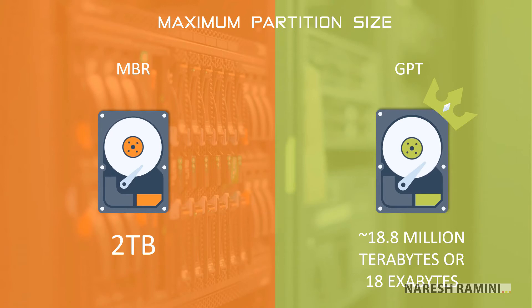When it comes to maximum partition size, on an MBR disk one can create a maximum partition size of 2TB. On a GPT disk, one can create a maximum partition size of 18 exabytes, or 18.8 million terabytes.